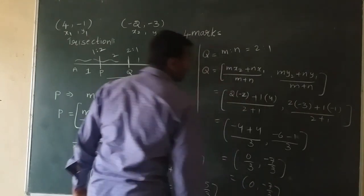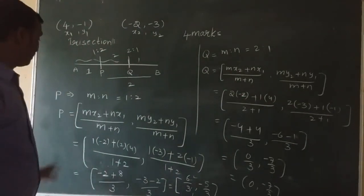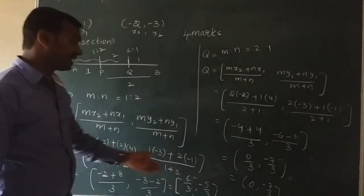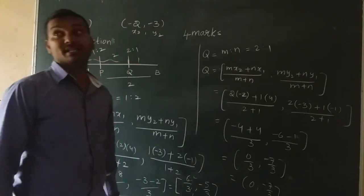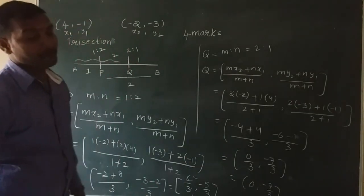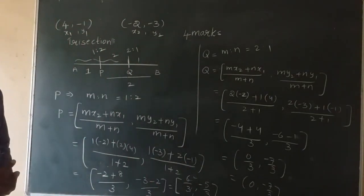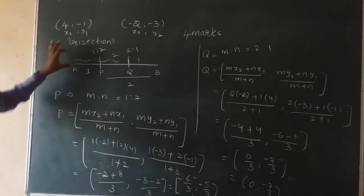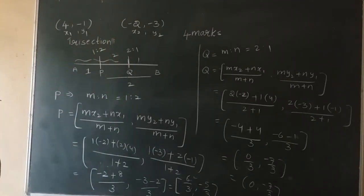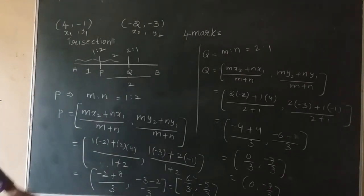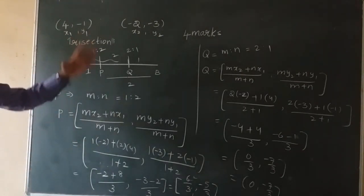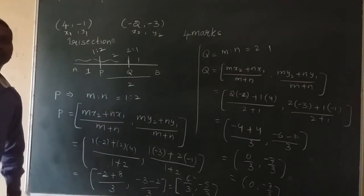Therefore, the points of trisection are P = (2, -5/3) and Q = (0, -7/3). The points which divide the line segment in ratio 1:2 and 2:1 are called points of trisection. Write this statement and show the calculation to get full 4 marks. Thank you.